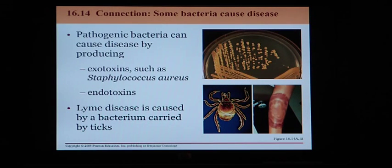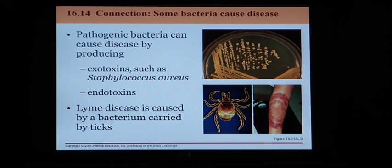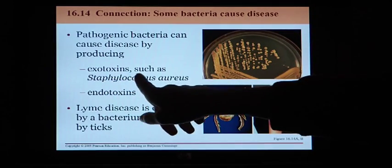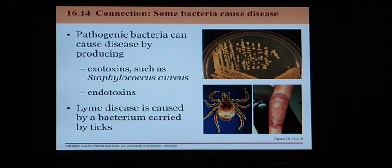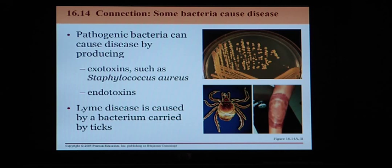Some bacteria are pathogenic and can cause disease. The first type produces exotoxins — toxins secreted out of the bacteria. An example is Staphylococcus aureus, or staph, which runs rampant in hospitals, spreads easily from patient to patient, and can cause nasty skin infections that are very hard to treat, especially if the strain is antibiotic-resistant.